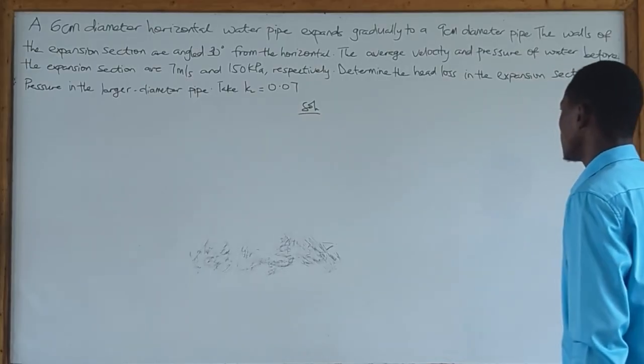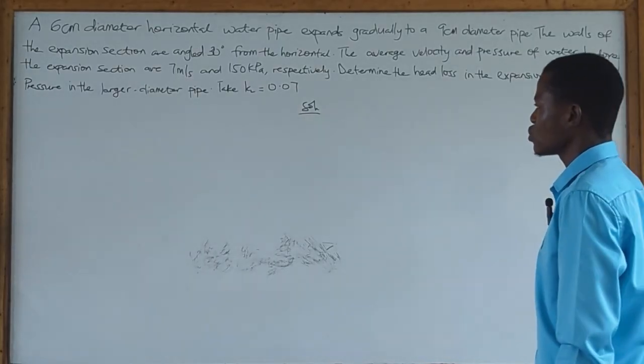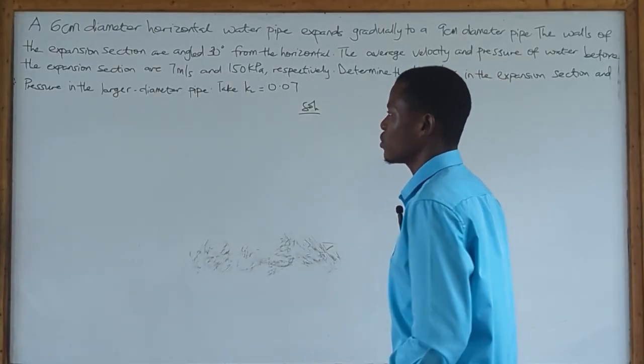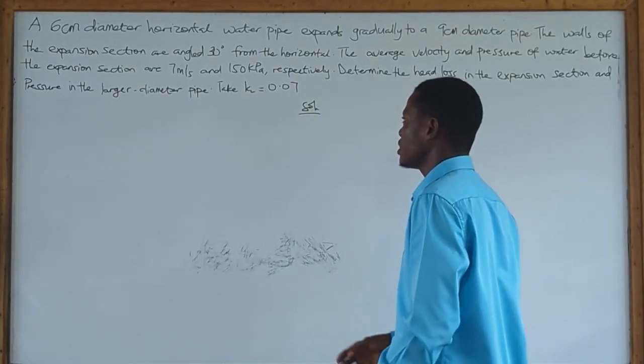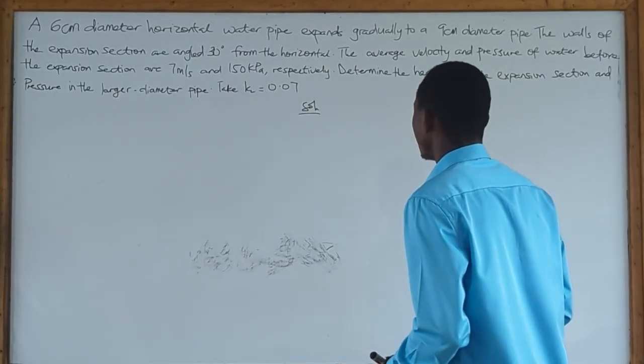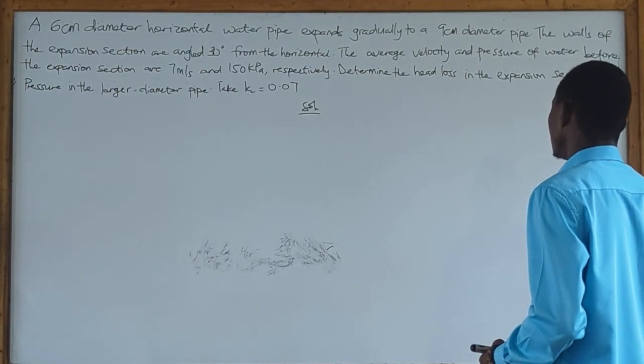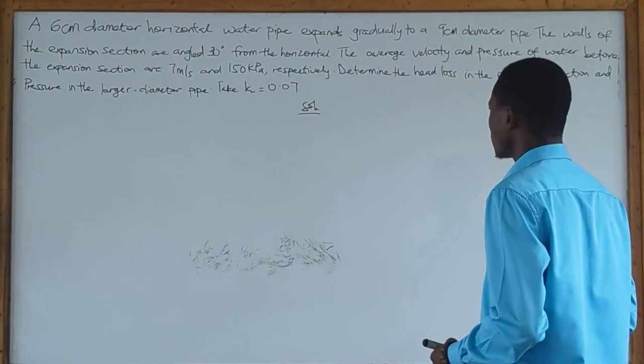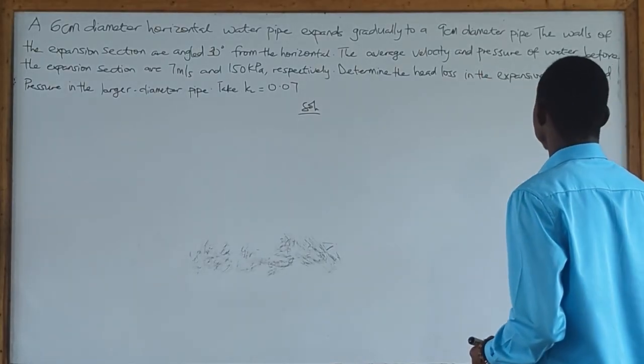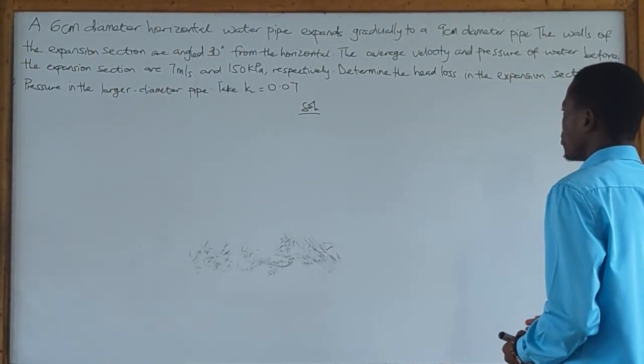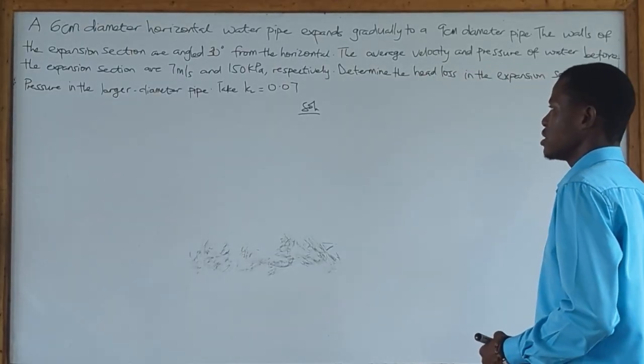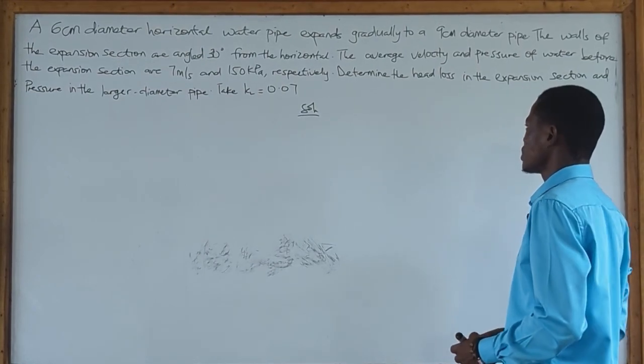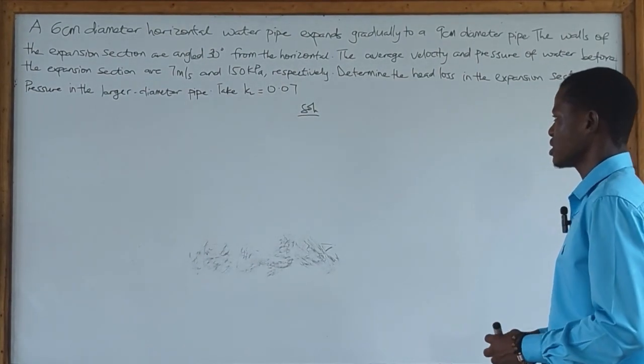The question is about determining the head loss in the expansion section and also the pressure in the larger diameter pipe. This is an expansion question. We have a diameter of a horizontal water pipe that expands gradually to 9 cm diameter pipe. The walls of the expansion section are angled 30 degrees from the horizontal. The velocities and the pressure are 7 meters per second and 150 kilopascal respectively. We've been given our loss coefficient to be 0.07, and we are to determine the head loss.